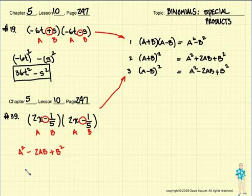So let's plug in the stuff that we got now. So this means take 2X, square it, minus 2 times A, which is 2X, times B, which is 1 fifth. Don't worry about the sign.